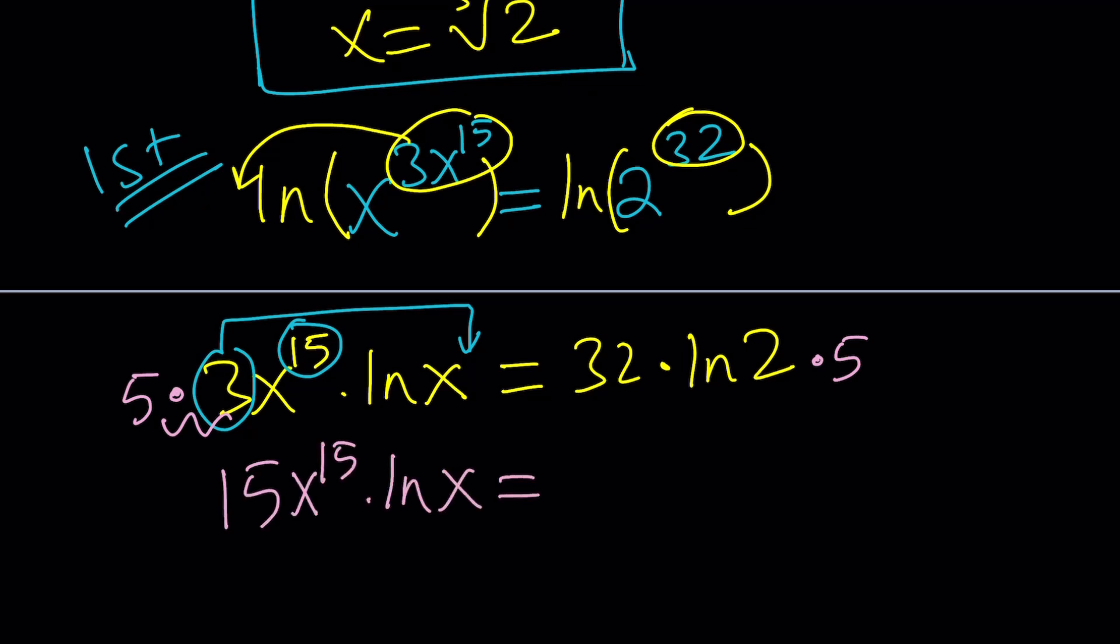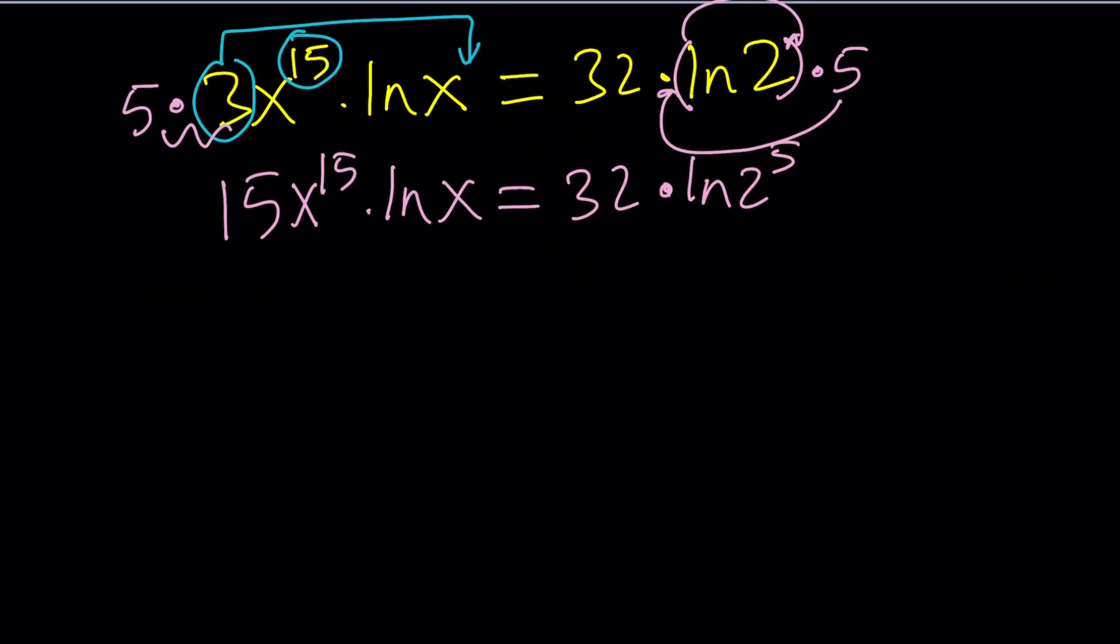And, then here, I kind of want to bring this 5 over here, and then over here. You get the idea? It's kind of weird the way it's written. I should probably write the 5 before ln2, but you get the idea. This can be written as ln2 to the 5th, multiply by 32. And, now, we're going to be getting what we want. If you move the exponents, x to the 15th times lnx equals, and let's write this as 2 to the 5th power, or, we can write this as 32 times ln32. Same idea.